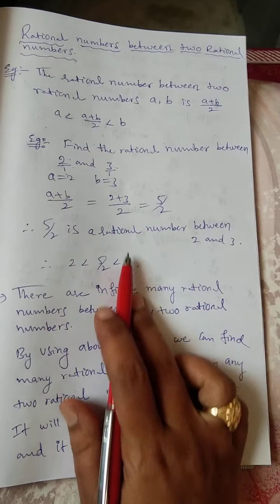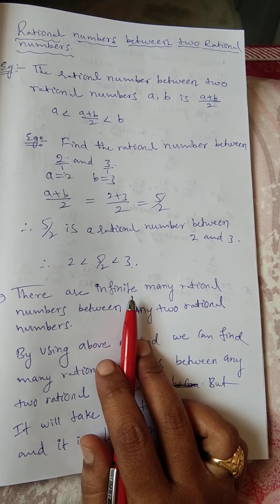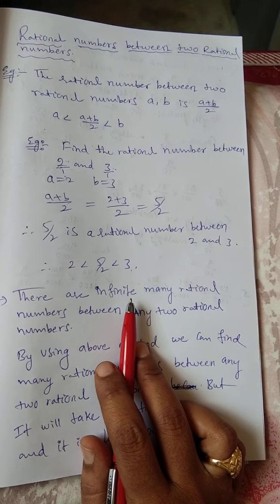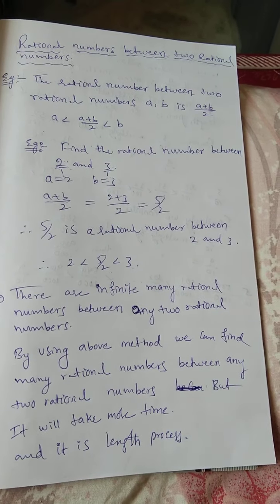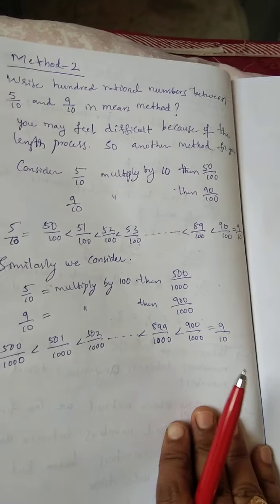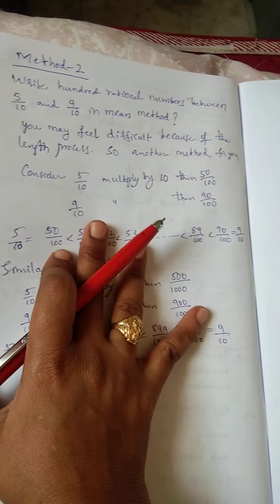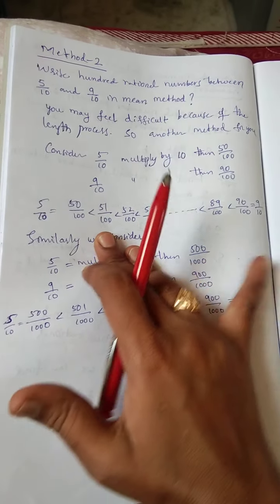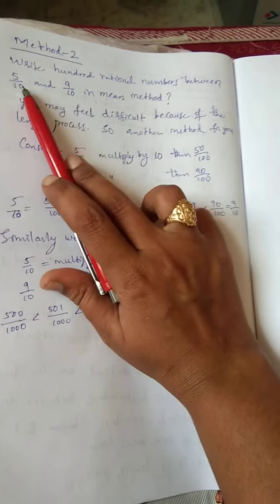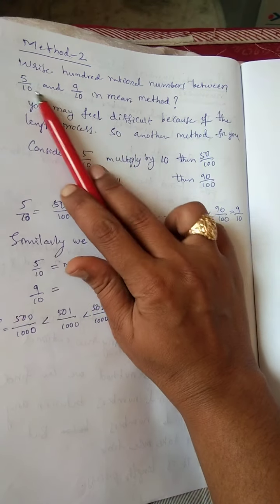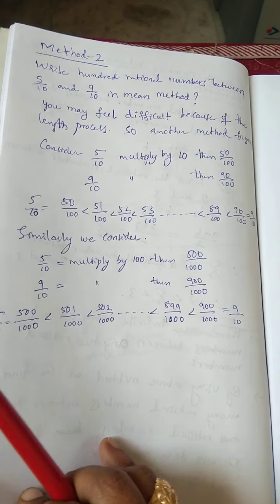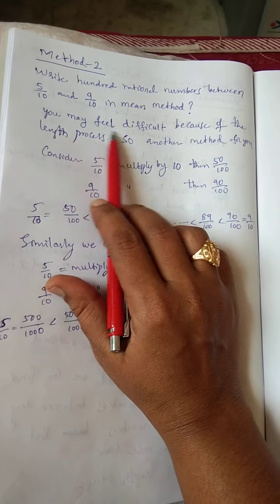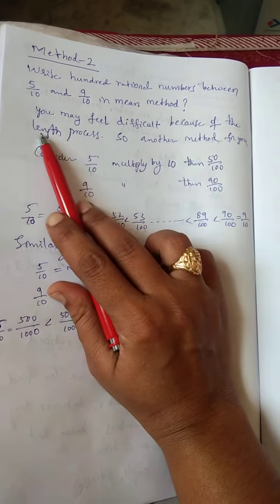In this method, we can find any number of rational numbers between two given rational numbers, but it will take more time and is a lengthy process. So, an easy method: I will tell you how to find more rational numbers between any two rational numbers. For example, write 100 rational numbers between 5 by 10 and 9 by 10. Using the mean method, you may feel it is difficult because of the lengthy process.